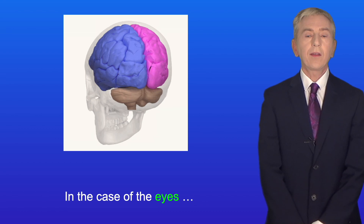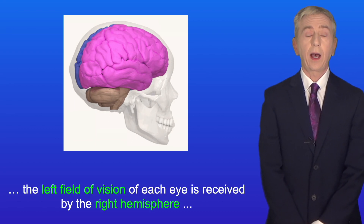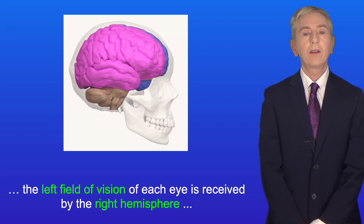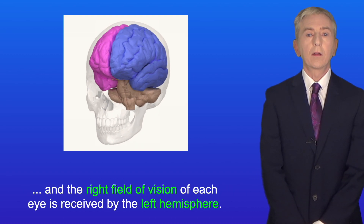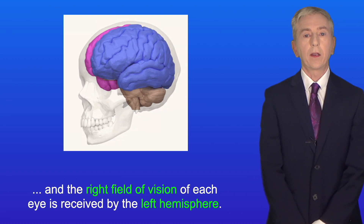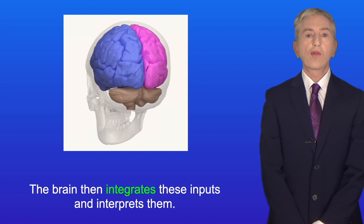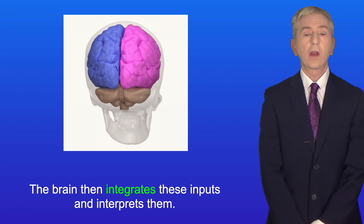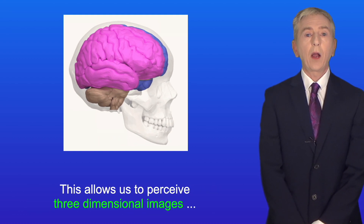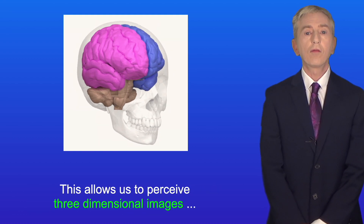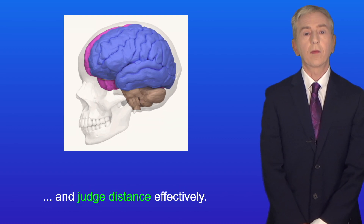In the case of the eyes, the left field of vision of each eye is received by the right hemisphere, and the right field of vision of each eye is received by the left hemisphere. The brain then integrates these inputs and interprets them, and this allows us to perceive three-dimensional images and judge distance effectively.